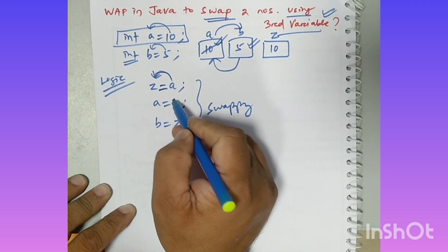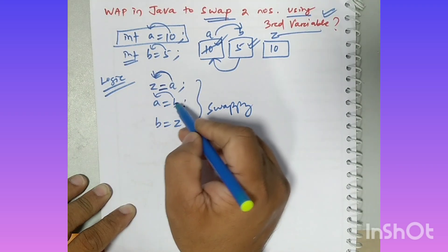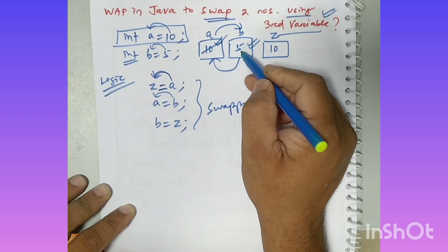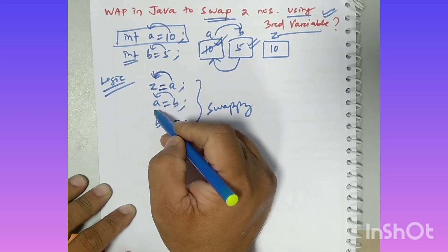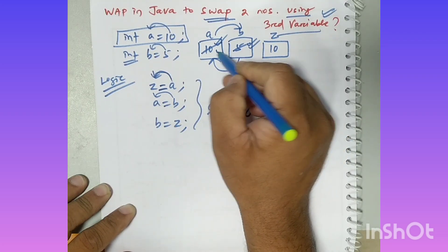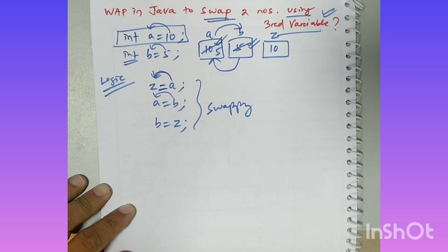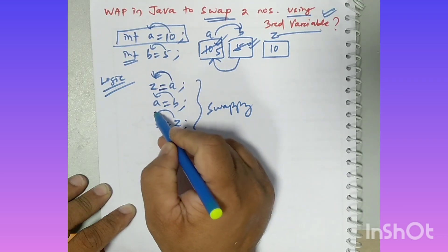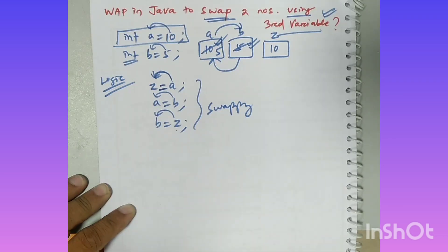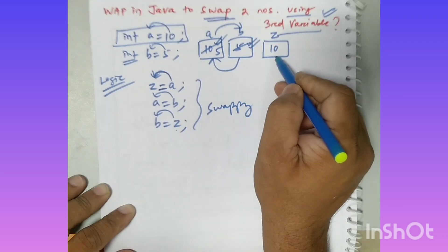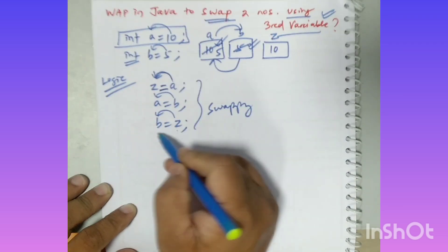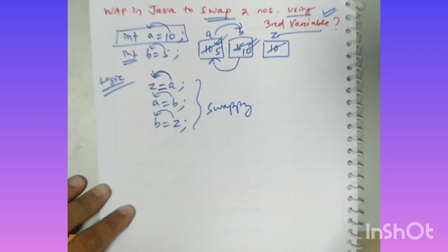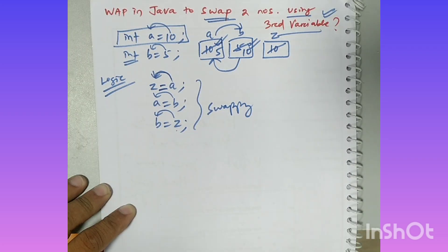Next, A is equal to B means the value of B will be assigned to A. Then B equal to Z means whatever the value of Z will be assigned to B. The value 10 had gone into J, so now B gets 10. So the swap is complete.